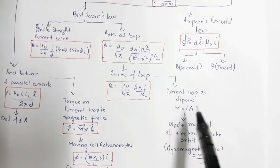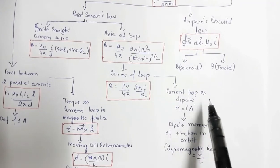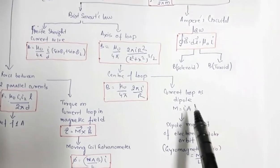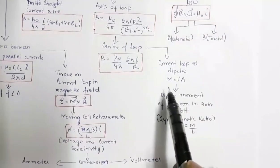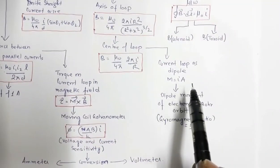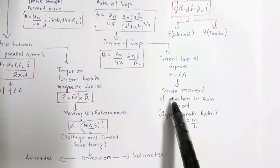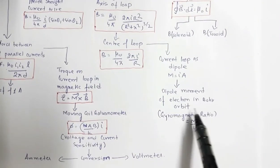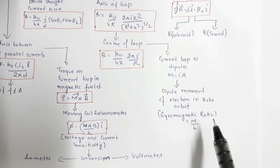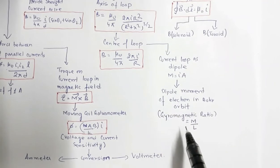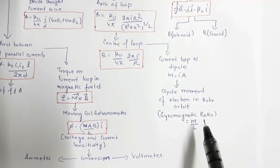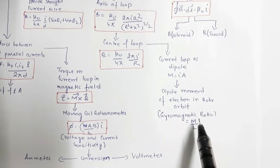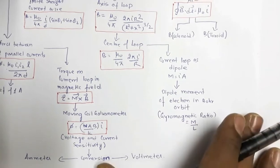A current-carrying loop behaves like a magnetic dipole with dipole moment m = iA. From this, you can calculate the dipole moment of an electron revolving in a Bohr orbit. There is also the gyromagnetic ratio, which is the ratio of the magnetic moment to the angular momentum — it is a constant.